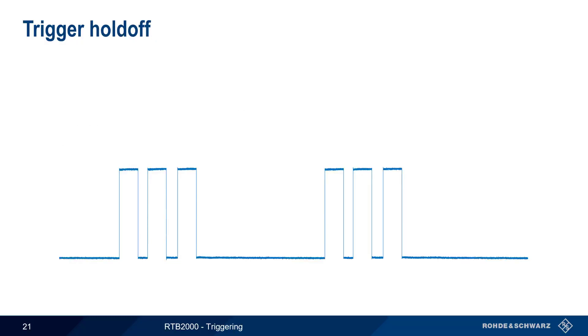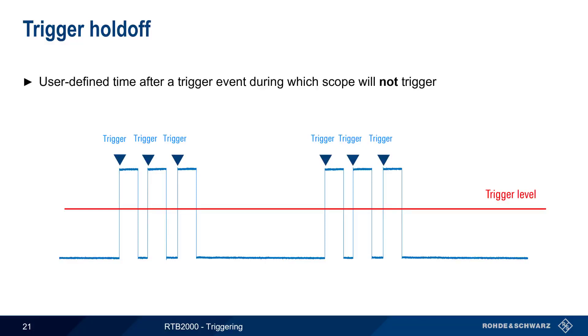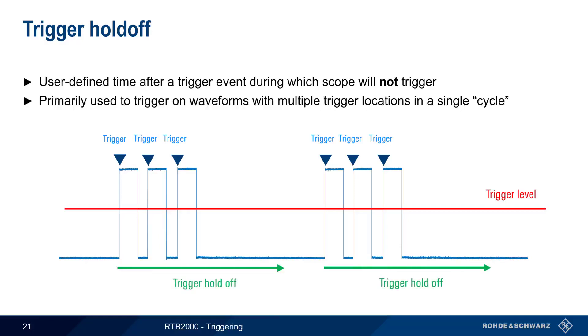Next, let's discuss trigger hold-off. If we configured a rising edge trigger, the RTB would normally trigger on each rising edge, as shown here. A trigger hold-off is a user-defined time after a trigger event during which the RTB will not trigger. Trigger hold-off is primarily used when triggering on waveforms that contain multiple trigger locations in a single cycle. After we define a trigger hold-off time, as shown, our scope will only trigger on the first pulse of each three-pulse sequence.